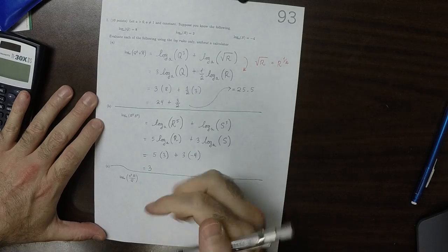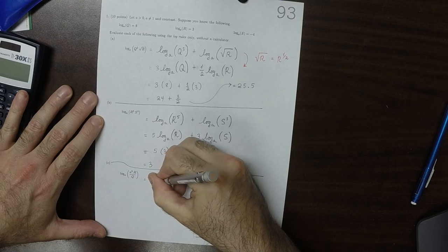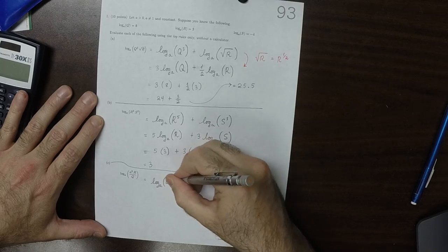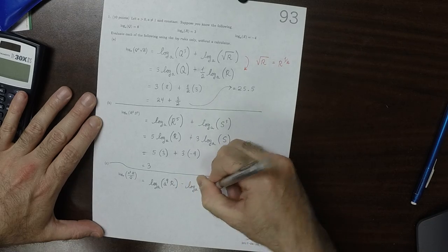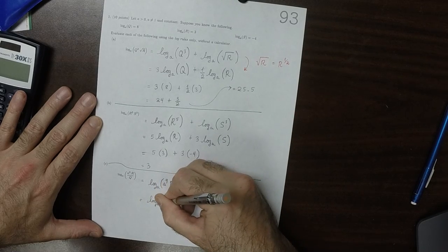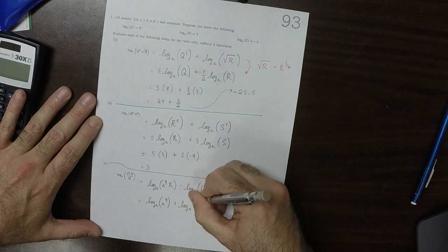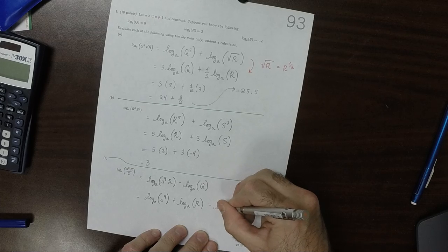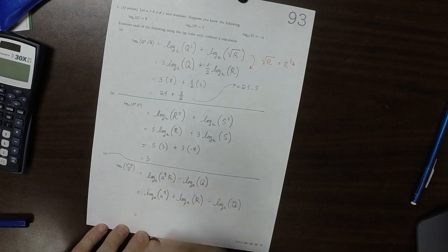And then this is log base a of a to 9 r minus a to 9 log base a of Q. So that would be log base a of a to 9 plus log base a of r minus log base a of Q, which is.